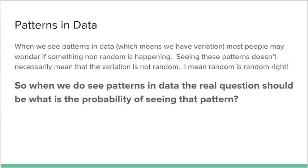Here's the big concept in this first intro topic: patterns in data. When we see patterns in data, which means we have variation, most people may wonder if something non-random is happening. But seeing these patterns doesn't necessarily mean the variation is not random. When we do see patterns in data, the real question should be: what is the probability of seeing that pattern? Don't question whether the pattern is random or not — think about the probability.